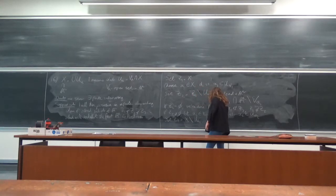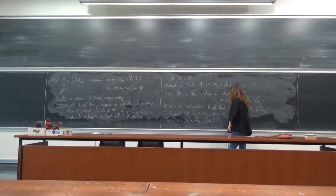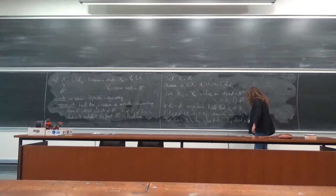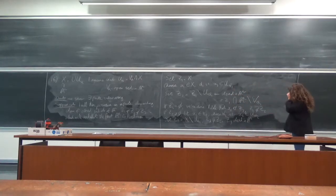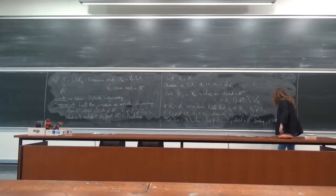Again, Z3 is contained in U_alpha2, and Z3 is closed in A^n. So iterating, if there is no finite subcovering...